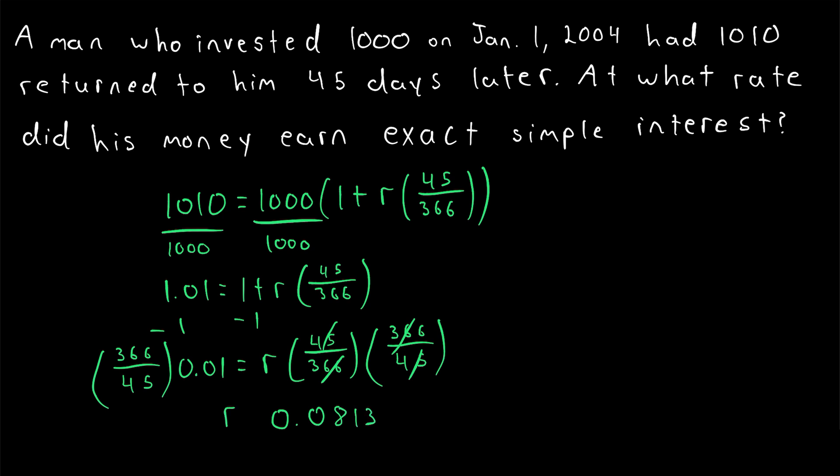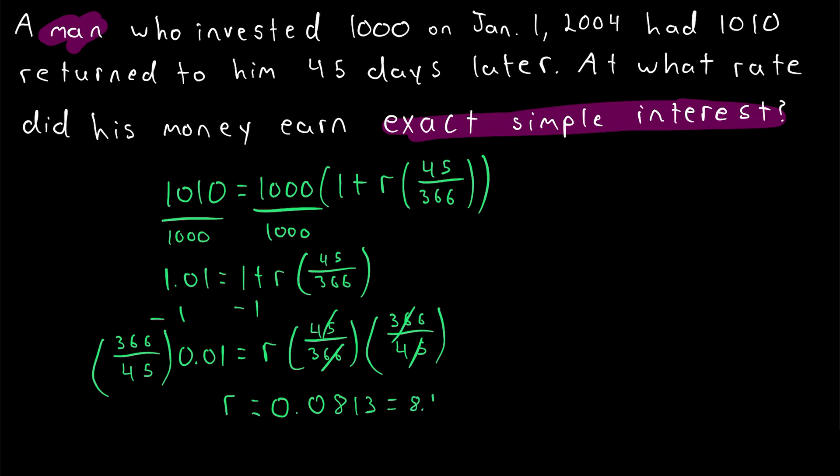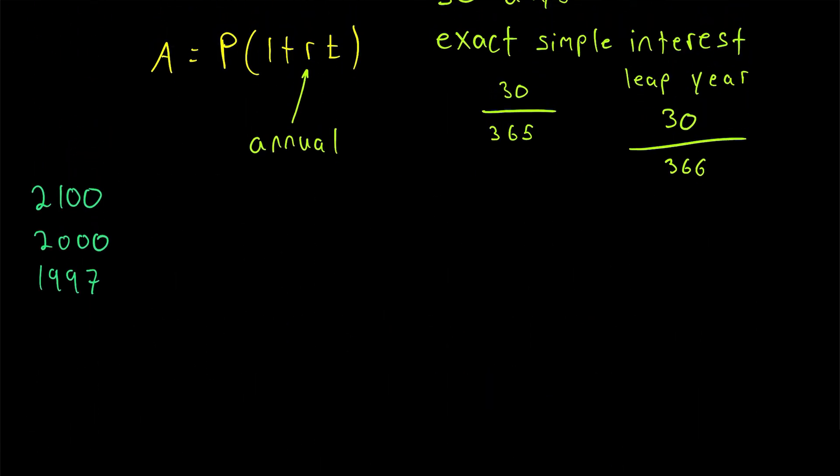And, on the other side of the equation, we just have the interest rate. Thus, on his investment, the man earned exact simple interest at an annual rate of about 0.0813, or 8.13%. So, that is how we make calculations using exact simple interest.